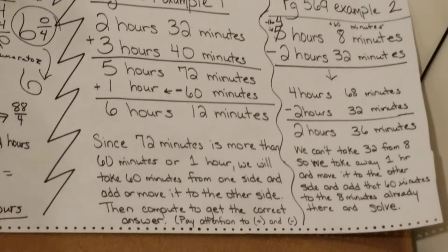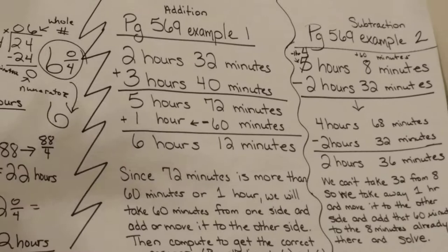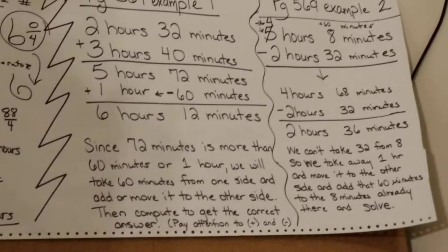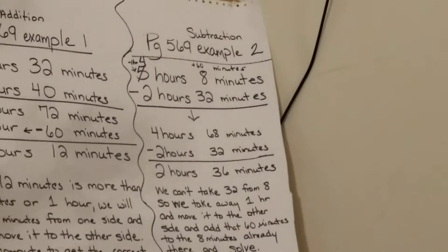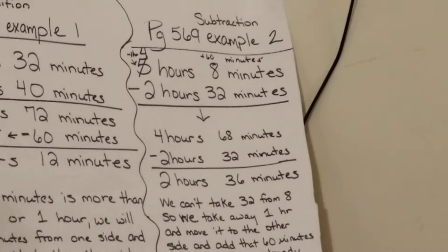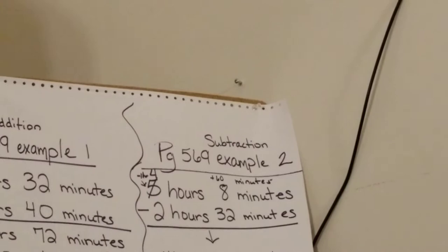So far we've covered multiplication, solving time problems, and addition. Now the last thing I'm going to show you is how to do solving time problems using subtraction. This example is also on page 569. In this problem, the original problem was 5 hours 8 minutes minus 2 hours 32 minutes.